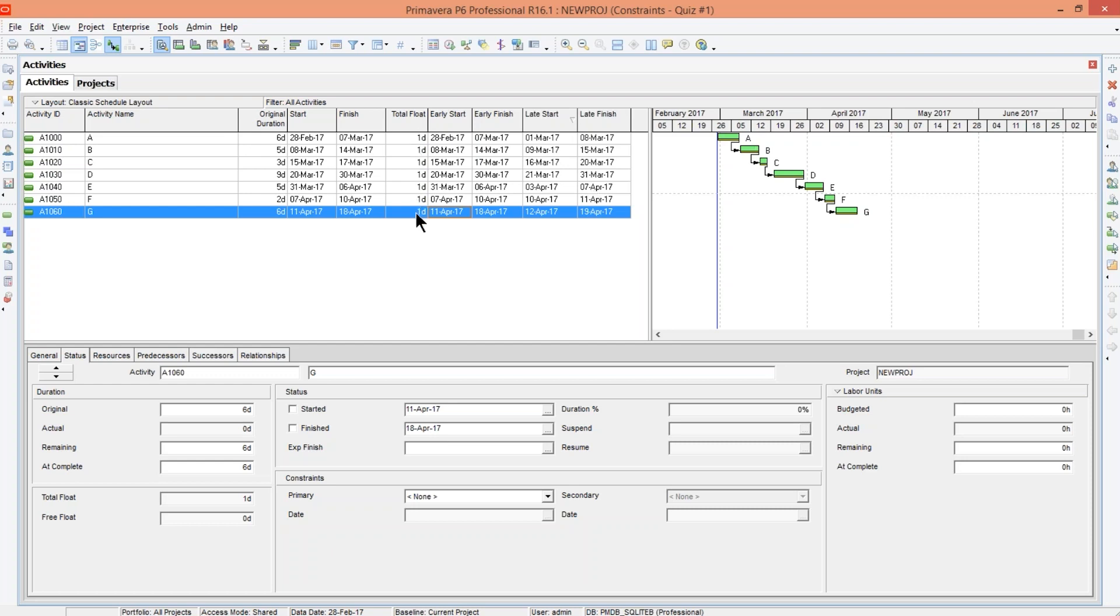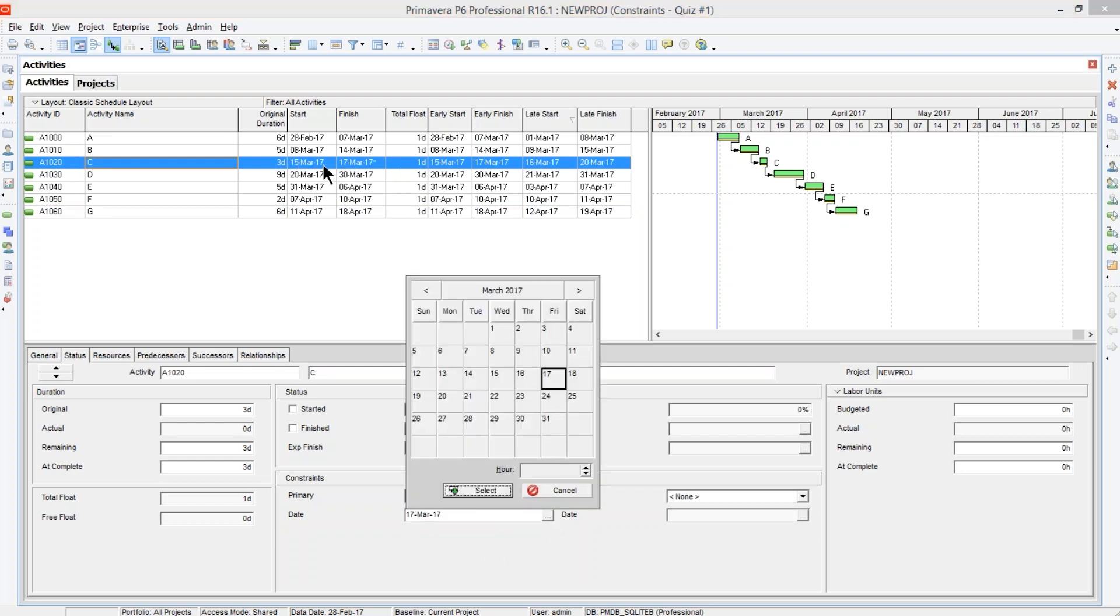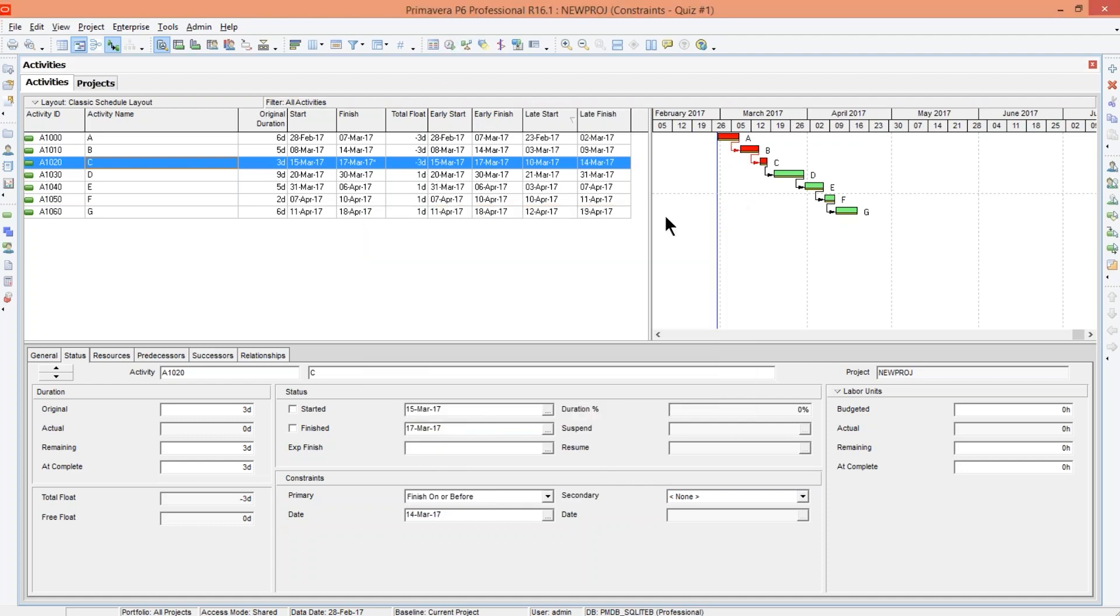And if you look at total float column here, we have one day of total float on this path of activities. So one day, and what we've done here is we've come to C, and we've said finish on or before, and we've set the date earlier than when it's currently finishing. So it's currently finishing on the 17th, and I'll probably bring it back a few days, like this. Essentially creating negative total float in activity C and its predecessors. So using a finish on or before constraint here applies, creates negative total float for that activity.